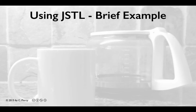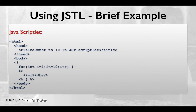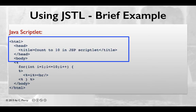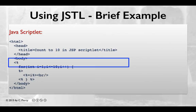Let's have a brief look at JSTL in action. First, let's look at a commonly used Java scriptlet. In this case, it's just a simple for loop. Here we mix HTML along with Java. We can see the beginning HTML, which starts the page, followed by the delimiter,